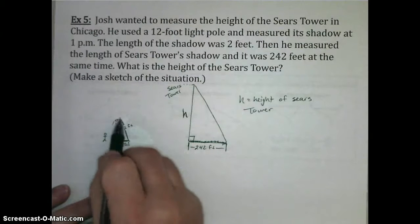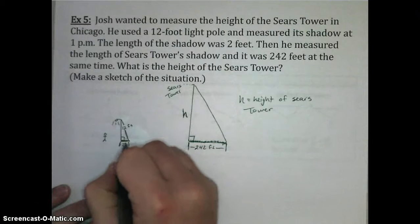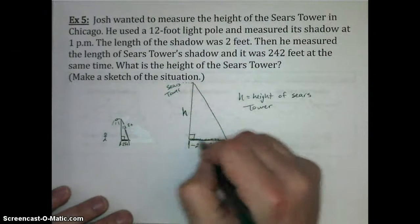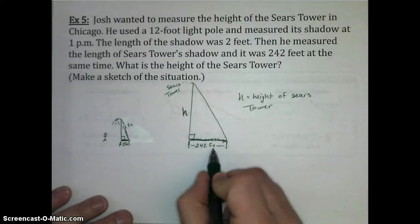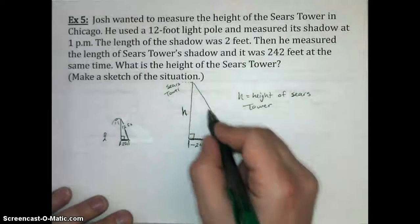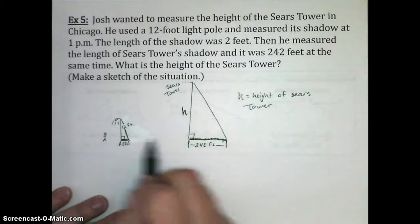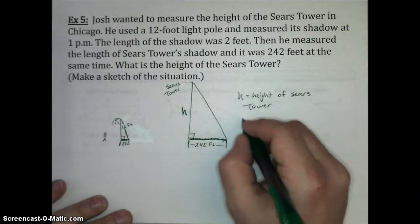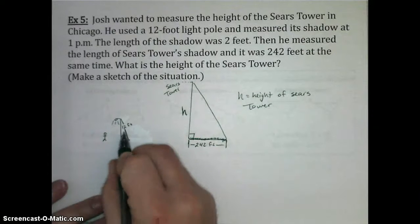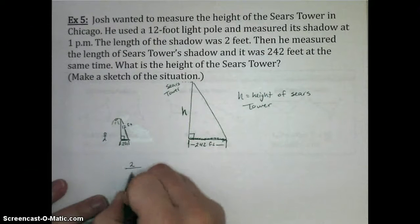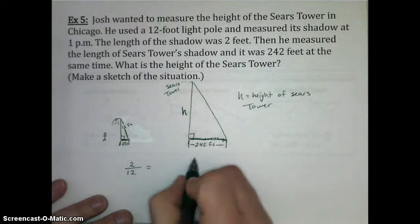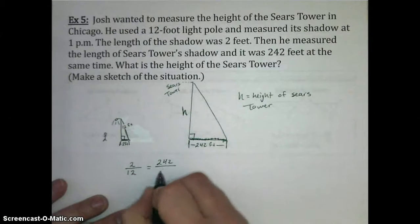All right, here's my sketch of the situation. You have the 12-foot light pole, and then we have our 2-foot shadow. That makes a right triangle, if you imagine connecting the top of the light pole to the end of the shadow. And then the Sears Tower would also cast a shadow, which is measured at 242 feet, and we're looking for the height of that Sears Tower, and so that forms another right triangle, and if these measurements are taken at the same time of day, these should be similar triangles.